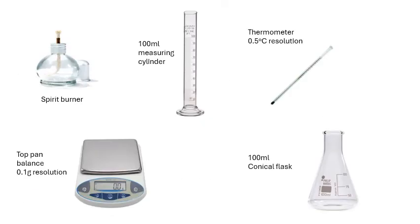This is the equipment you'll need: a spirit burner for each of the different fuels — try to keep the wick about the same size for each to make it fair. A top pan balance with at least 0.1 g resolution (0.01 g is better), a 100 mL measuring cylinder, a thermometer with 0.5°C resolution (a digital thermometer with 0.1°C is fine too), and a 100 mL conical flask.